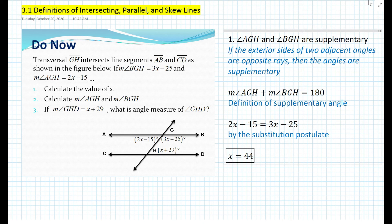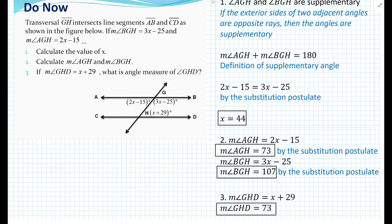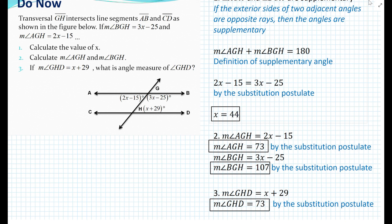That is the answer to problem number one. Now, to calculate the measure of angle AGH and angle BGH, we simply back substitute. We obtain a measure of angle AGH of 73 degrees and the measure of angle BGH to be 107 degrees by the substitution postulate. For problem number three, substituting x equals 44 into x plus 29, we find the measure of angle GHD to be 73 degrees.